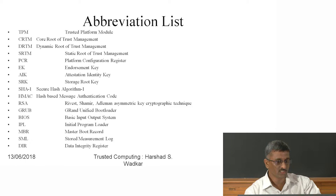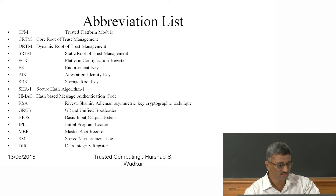TPM stands for Trusted Platform Module. CRTM is Core Root of Trust Management. DRTM is Dynamic Root of Trust. SRTM is Static Root of Trust. There is an endorsement key, an attestation key, and a storage root key. There are also algorithms such as SHA1 and HMAC.